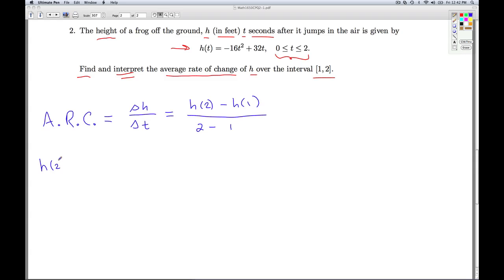So we go off now to find h of 2. Everywhere we see a t, we're going to substitute the 2. 2 squared is 4, 4 times negative 16 is negative 64, 32 times 2 is also 64. And so we get h of 2 is 0.